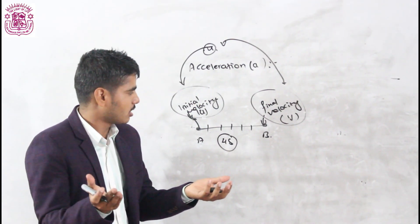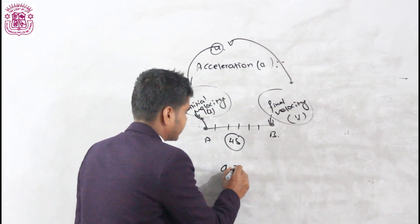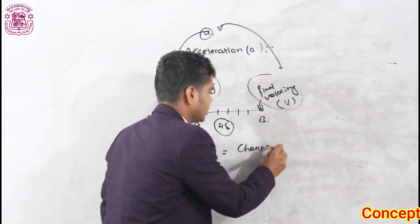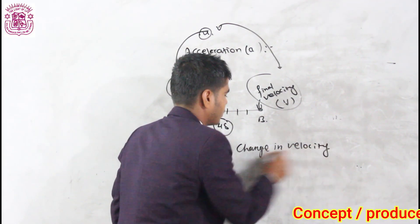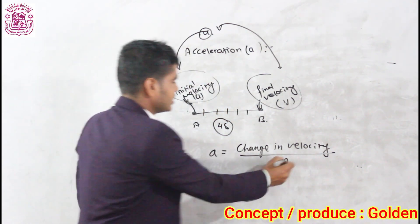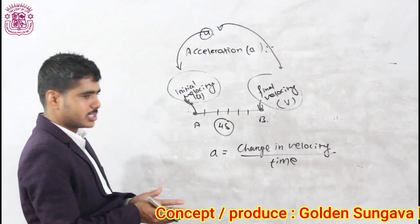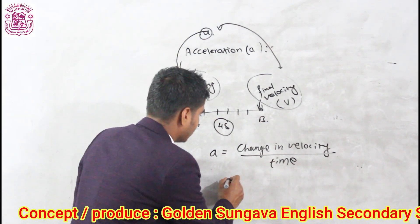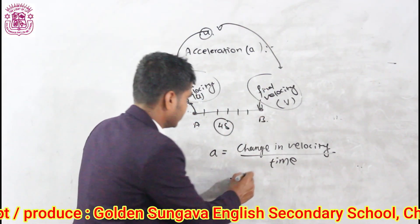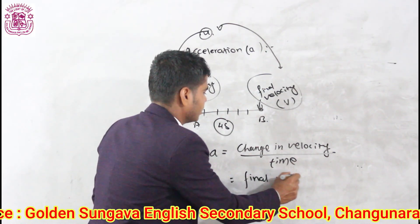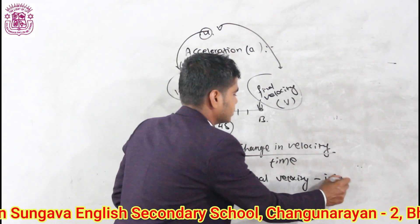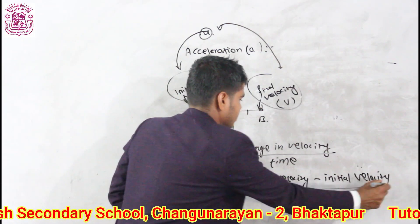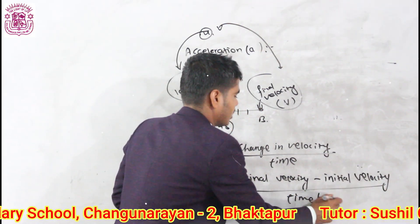Acceleration, represented by small a, is defined as the change in velocity per unit time. Change in velocity means final velocity minus initial velocity. So acceleration a equals final velocity V minus initial velocity U, divided by time taken T.